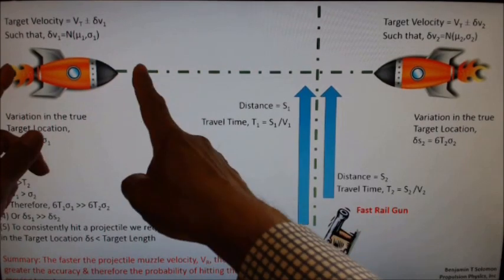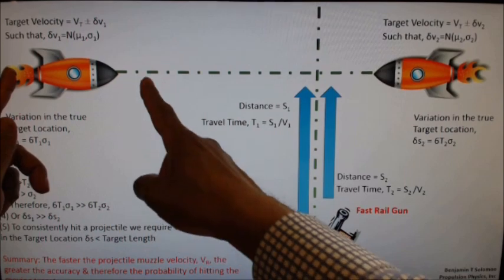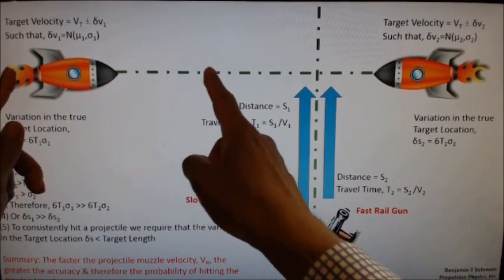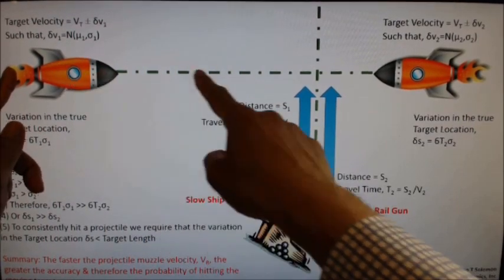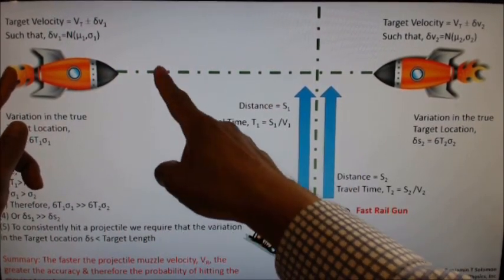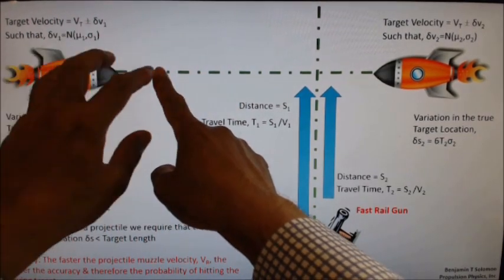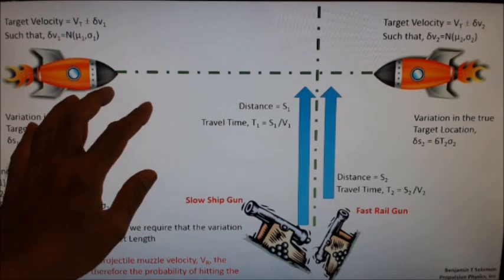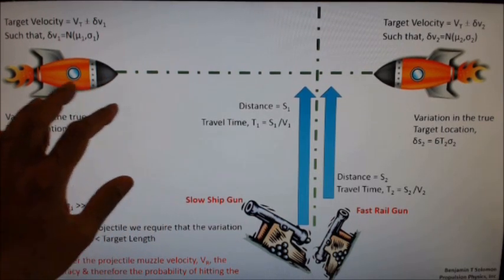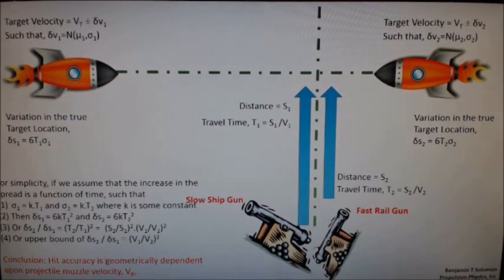Now, consider if the dispersion delta s was this large and the projectile approached it. And the target could be anywhere in this location. And as the projectile reached it, the target could have been here or could have been behind it. So it would miss the target, not because of the original initial calculations, but because of the uncertainty introduced by delta v1.